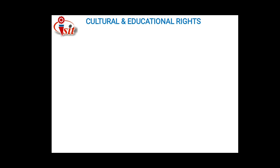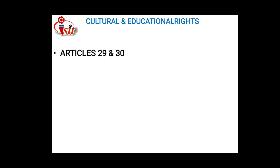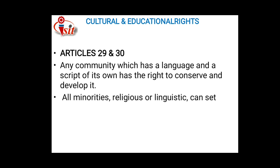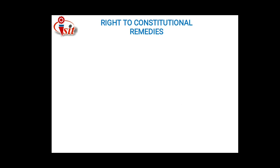The last of the listed rights is cultural and educational rights — Sanskriti aur Shiksha Sambandhi Adhikar. Articles 29 and 30 give these rights. Any community which has a language and script of its own has the right to conserve and develop it. All minorities — religious or linguistic — can set up their own educational institutes to preserve and develop their own culture.